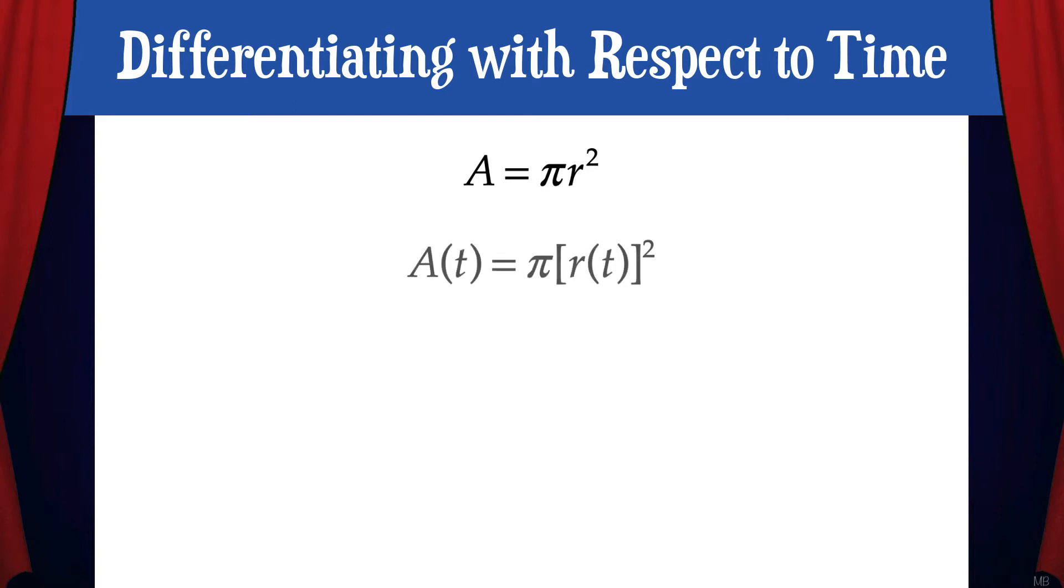For now let's think of this as A of t equals pi r of t squared. Now let's take the derivative of each side with respect to t. For simplicity of notation, I've removed the t from the A and the r functions.